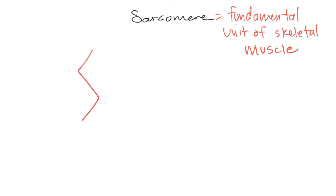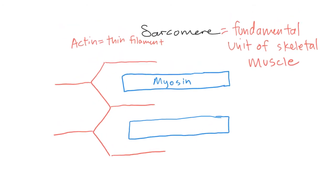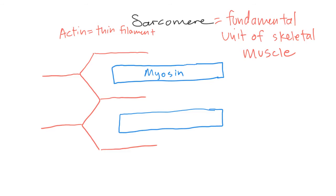So we're going to draw this sarcomere, starting with this is the actin, which equals our thin filament. Okay, this is a protein. And we call it the thin filament because compared to our thick filament, which is myosin, it is much thinner. Wait, is the myosin the thin one, or the actin? Actin's the thin one. Myosin is thick.